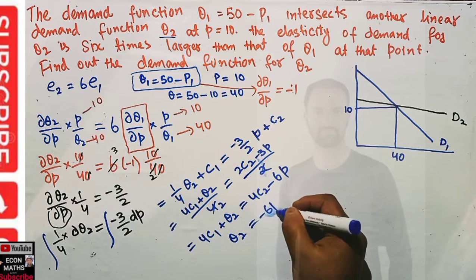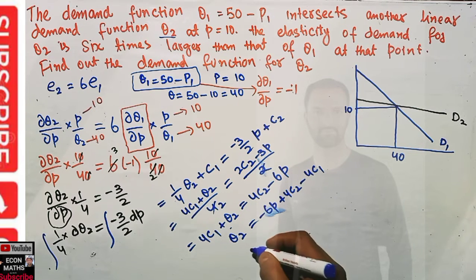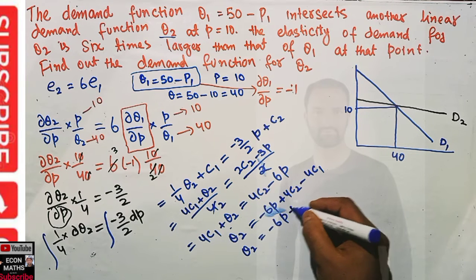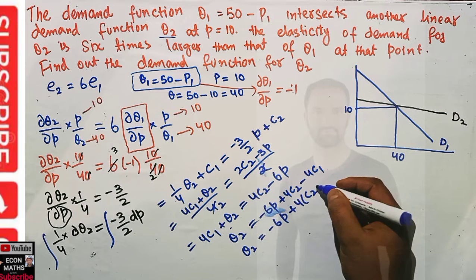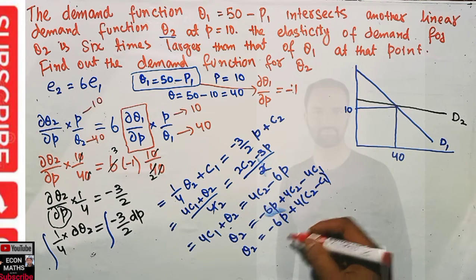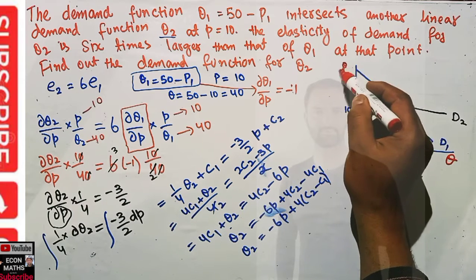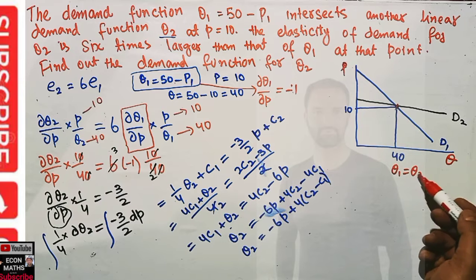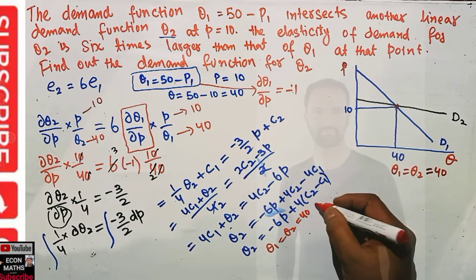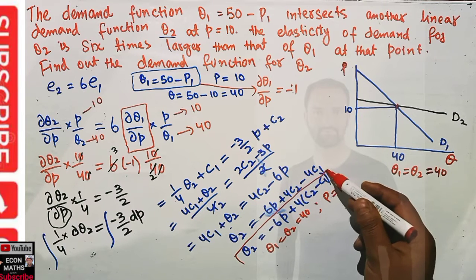So q2 equals minus 6p plus 4(c2 minus c1). At the intersection point, q1 is equal to q2, which is equal to 40, and p is equal to 10. We substitute these values into this equation to find the constant term.